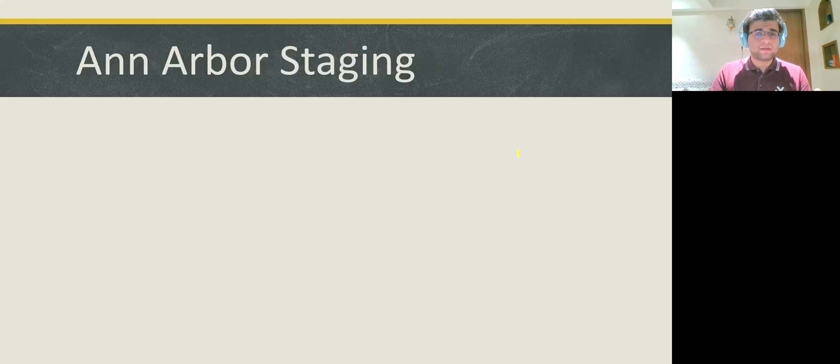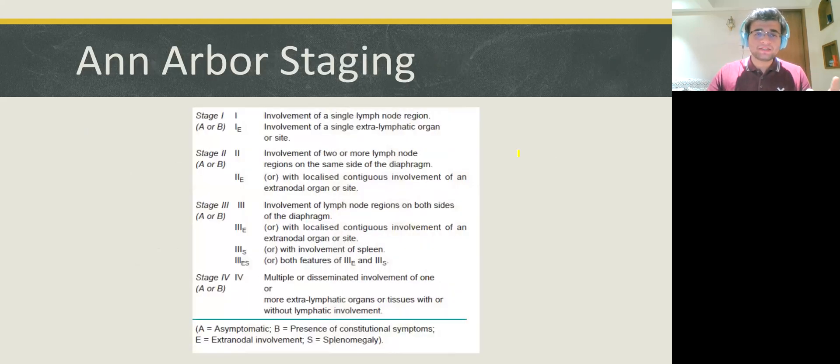Moving ahead to the Ann Arbor staging. The Ann Arbor staging constitutes of four major stages. Stage 1, Stage 2, Stage 3 and Stage 4. Stage 1 has single lymph node region involvement. Stage 2, two or more lymph node regions are involved on the same side of the diaphragm. On Stage 3, lymph node regions are involved on both the sides of the diaphragm. This is the difference between Stage 2 and 3.